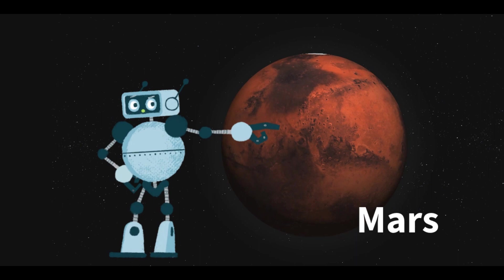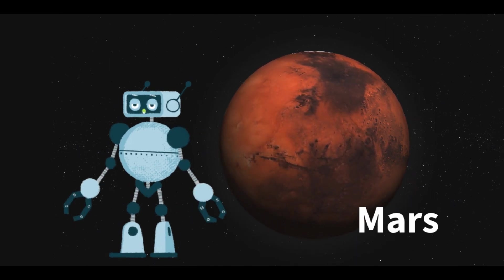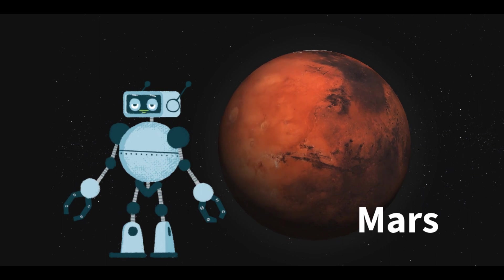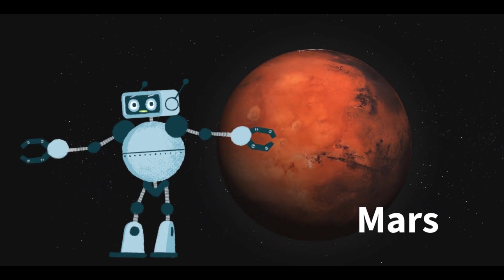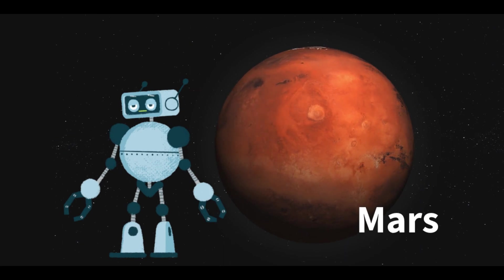Mars, the red planet, is the fourth planet from the Sun, smaller than Earth with a diameter of about 6,779 kilometers (4,212 miles). It's known for its rusty red appearance due to iron oxide (rust) on the surface.